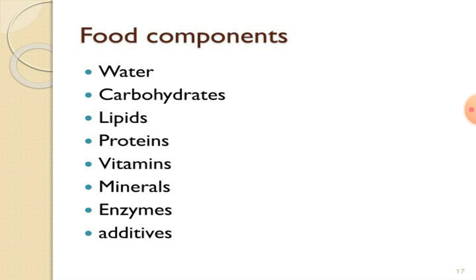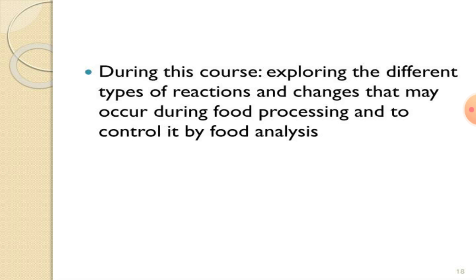There are various types of foods and various types of components added into those foods — for example, water, carbohydrates, lipids, proteins, vitamins, minerals, enzymes, additives, etc. During processing, different types of reactions, explorations, and changes may occur during food processing, and food analysis is used to control them. When food analysis is needed, it becomes a most important part of that analysis.